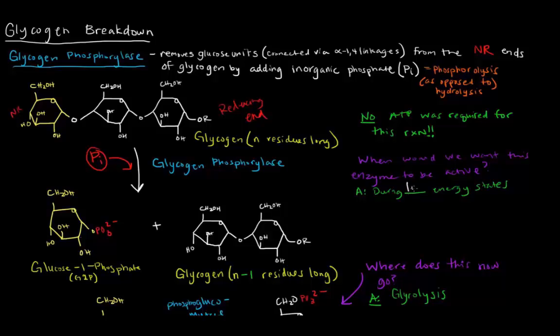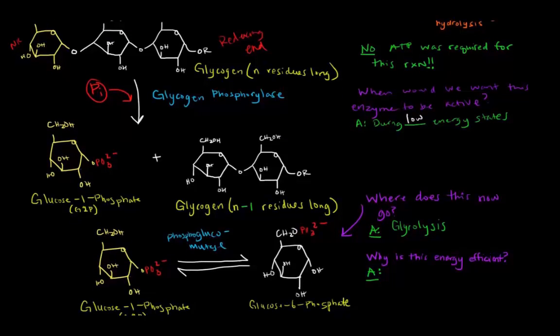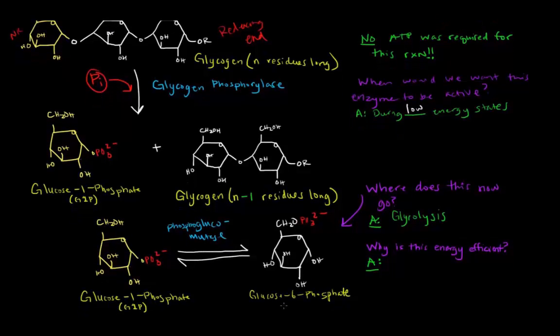So when would we want this enzyme to be active? We'd want it to be active in low energy states because what this is going to do is free up glucose that we can use to break down for some ATP. So that's why we actually have this glucose 1-phosphate converted into the glucose 6-phosphate to go to glycolysis.